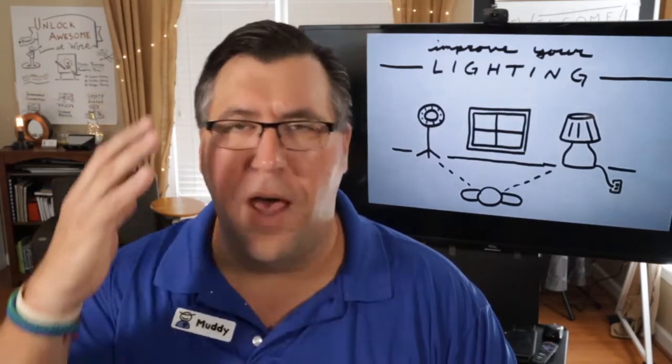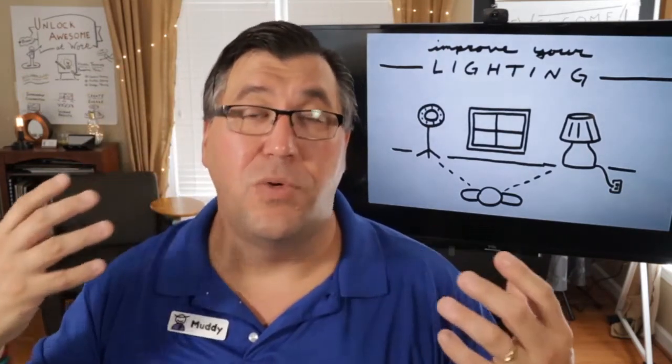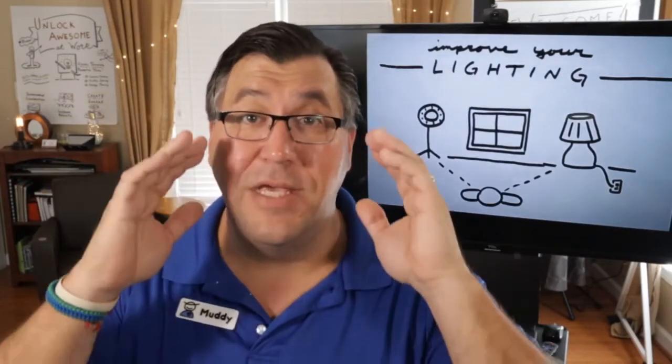We want the light to be coming from the right direction — ideally in front of you or just a little bit off to the sides. We want to avoid bright light right behind you, like sitting in front of a brightly lit window. That's called backlighting, and it's a really tricky situation for the camera. It's going to make you look like a silhouette against a really bright background. The best case is that the light is coming from the front or about 45 degrees from either side.